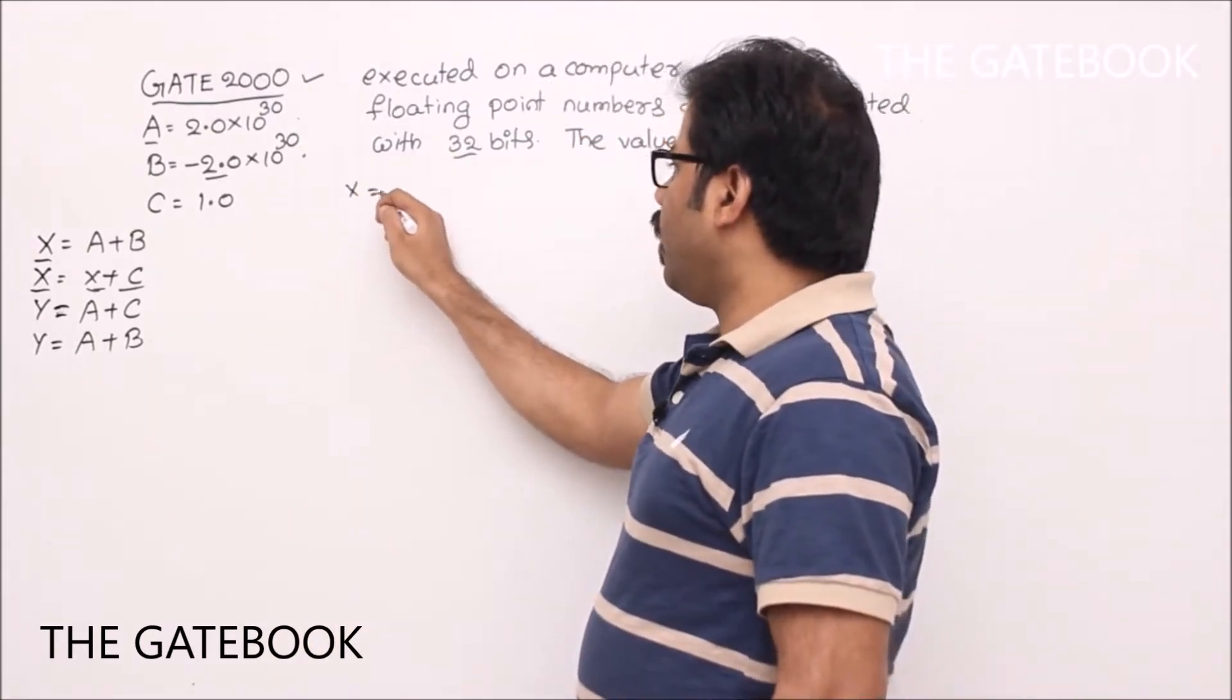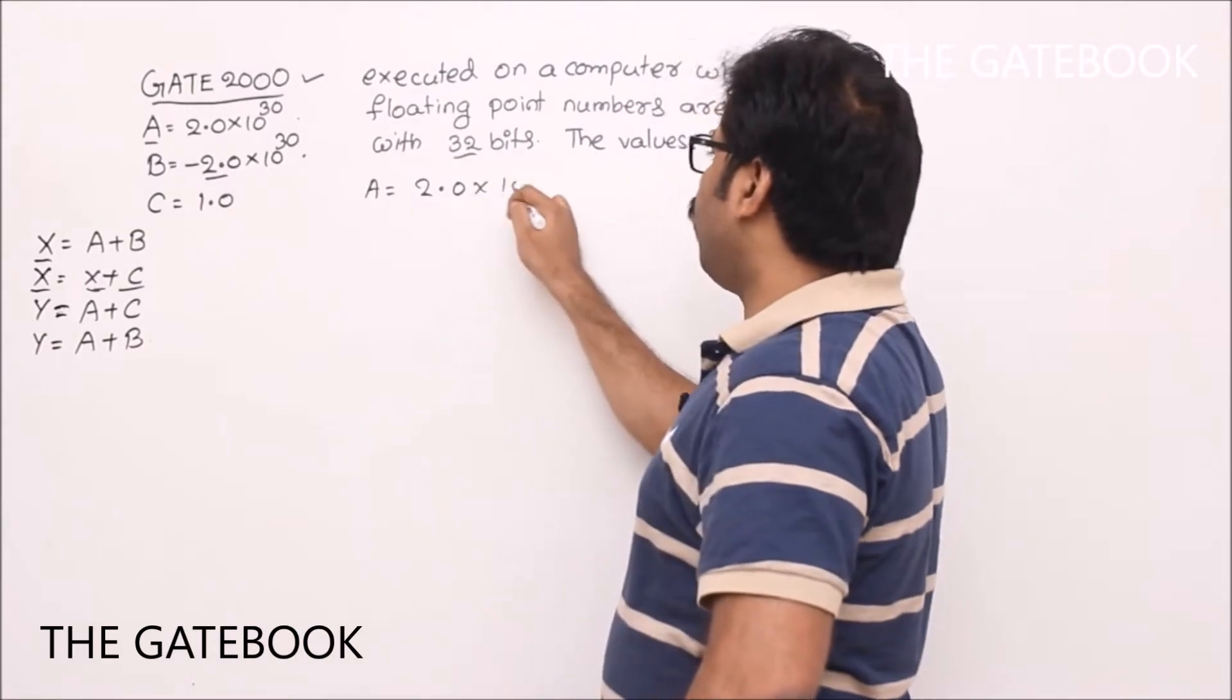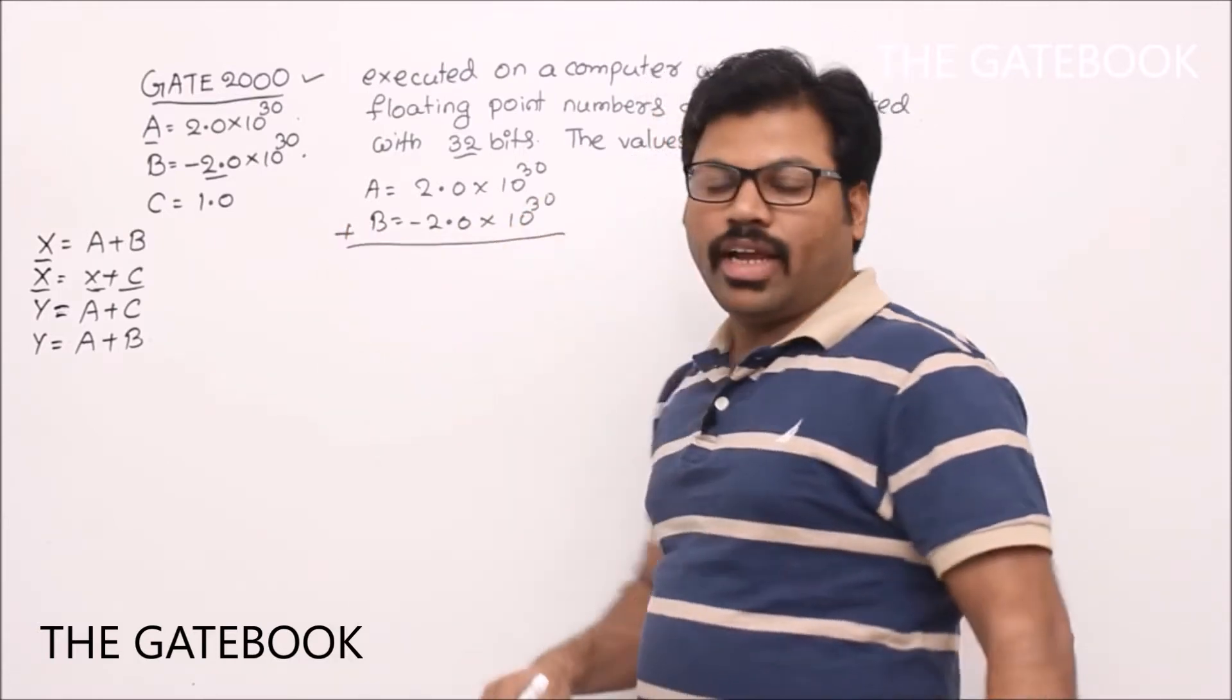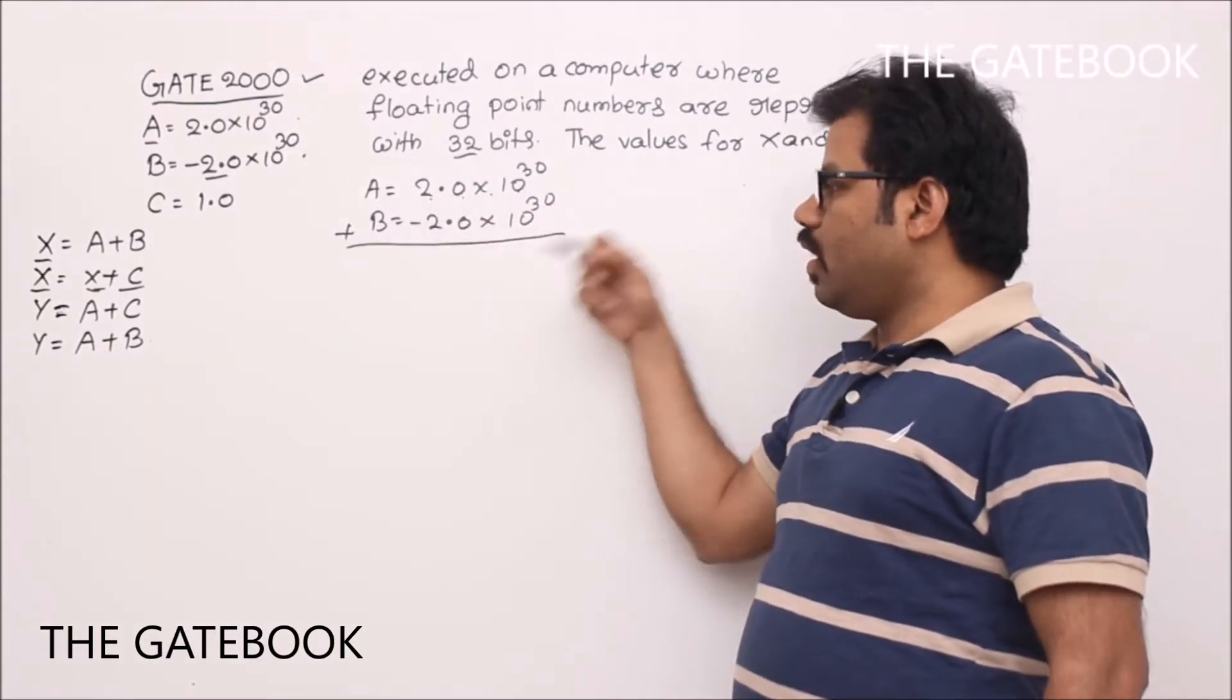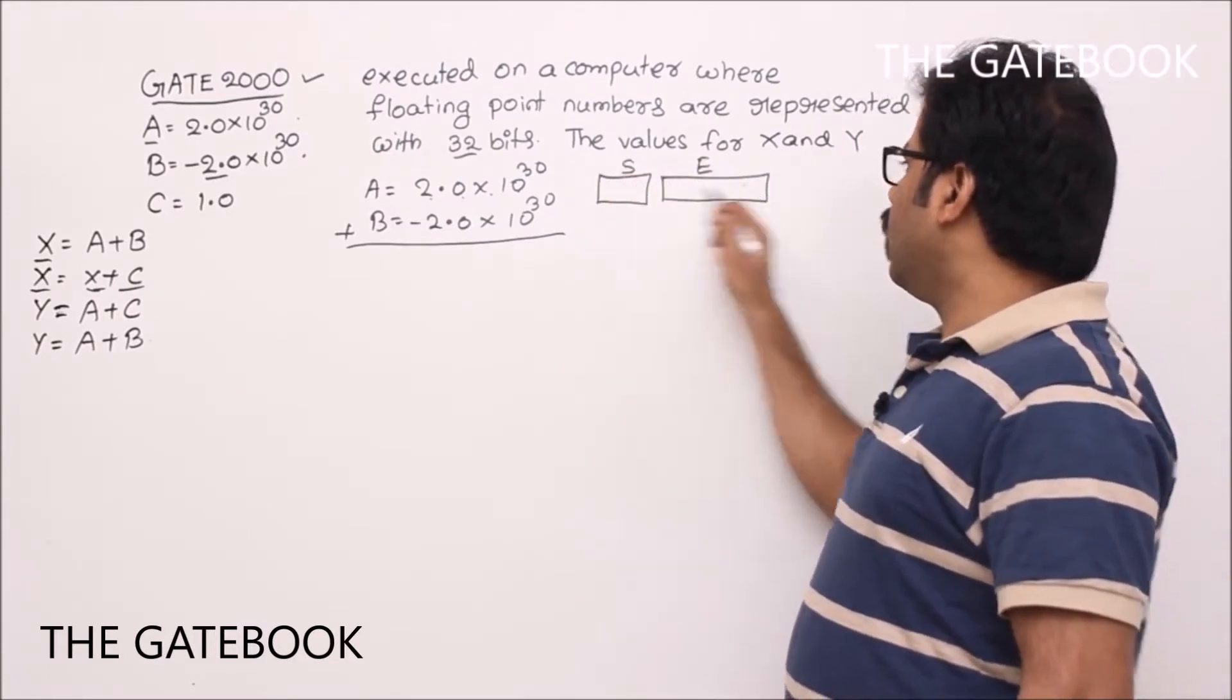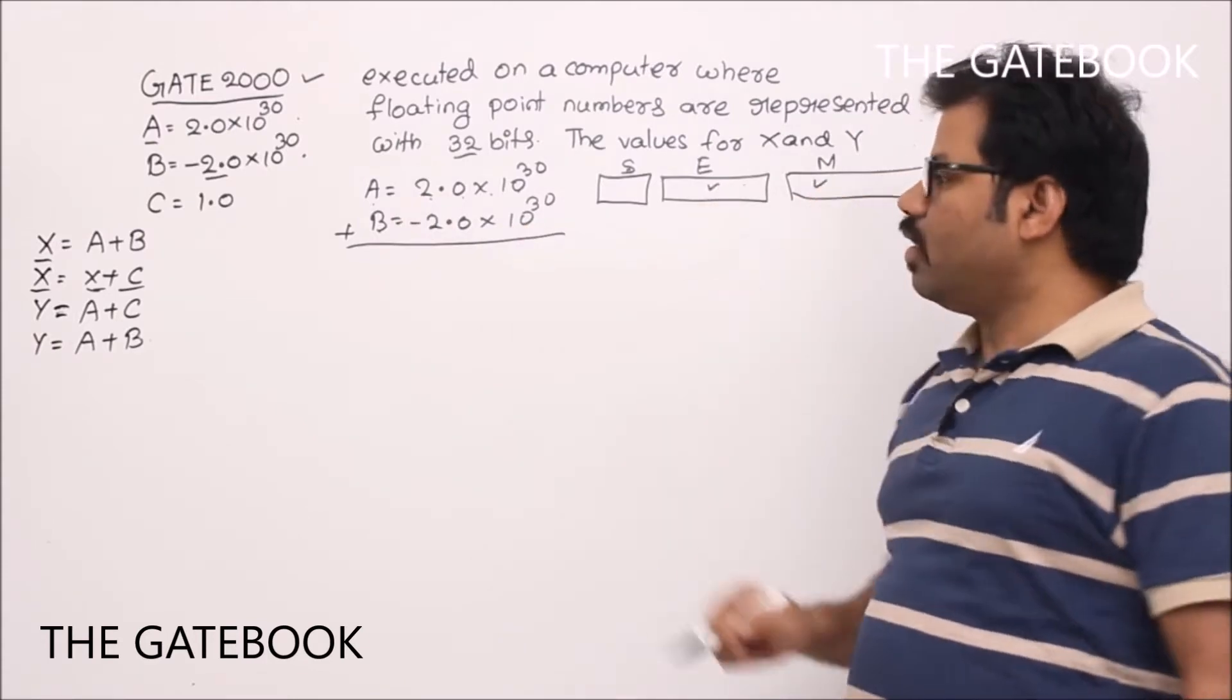So if you execute these instructions, you will understand. Let us do that. First of all, X equal to A plus B. What is A? 2.0, let us take A first. 2.0 into 10 to the power of 30. B is minus 2.0 into 10 to the power of 30. So here we should do A plus B, correct? I would like to tell you one quick thing. The format for 2.0 into 10 power of 30 in floating point representation using the 32 bits, we are going to use 32 bits like this: exponent, sign and mantissa. So same pattern. Other than sign bit, for A and B, we are going to have same format.